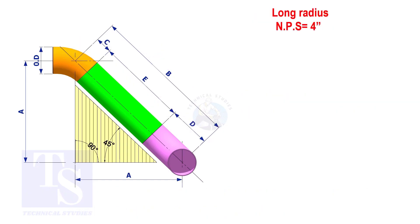Assume that the elbows are long radius. Calculate the true length of the pipe.